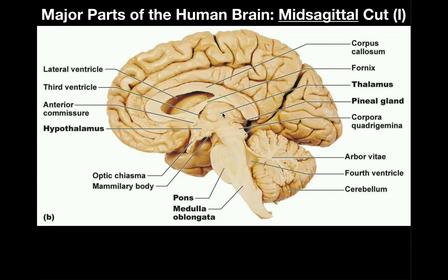Instead of going anterior from the thalamus, if we go posterior to it, we have this little bump called the pineal gland — directly posterior to the thalamus. As you'll see later, it's actually directly superior to these two bumps called the corpora quadrigemina. The pineal gland, or epithalamus, is an endocrine gland that releases melatonin to help you sleep.